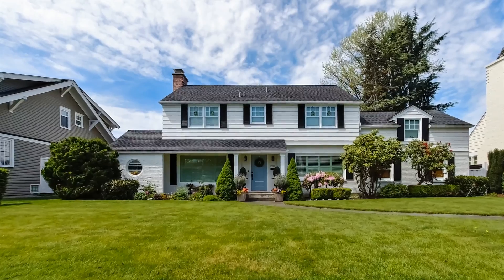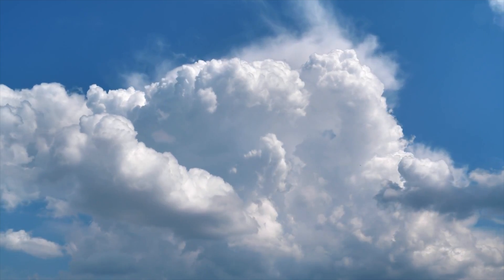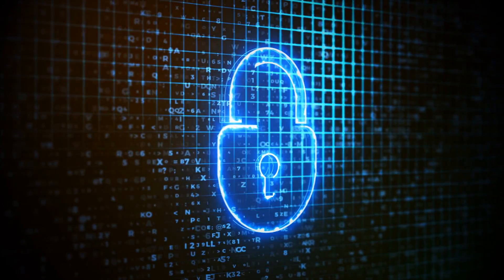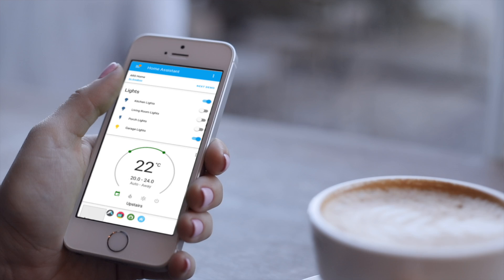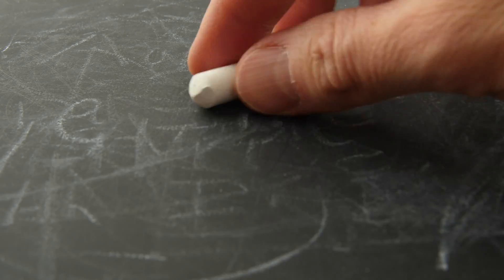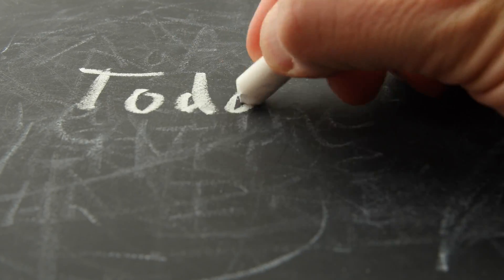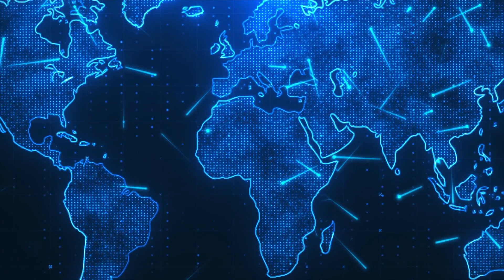One of the great things about Home Assistant is that it runs locally. It doesn't rely on any cloud services, and it can be secured within your home network. This means that even without an internet connection, your automation should continue to work. But one of the great things about smart home automation is being able to access your devices remotely, so today I'm going to look at three ways — maybe four — that you can access Home Assistant from anywhere in the world.